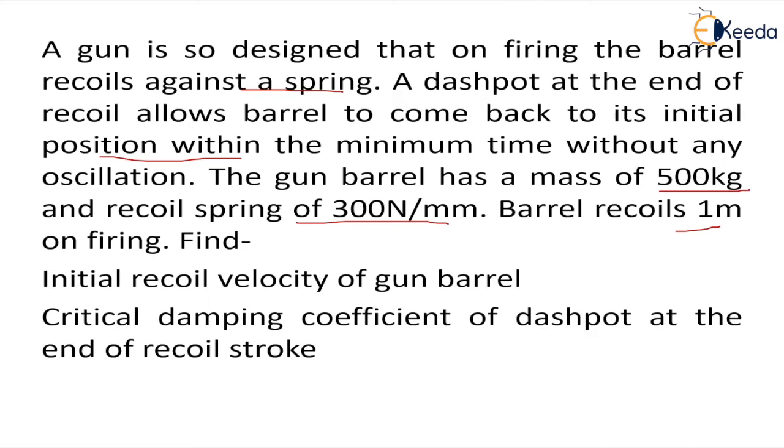We have to find the initial recoil velocity of gun barrel and critical damping coefficient of dashpot at the end of recoil stroke. Now in cases where we want the magnitude to come to zero or we want the magnitude to come to the minimum value in very small duration of time, in those cases we use the critical damping system.